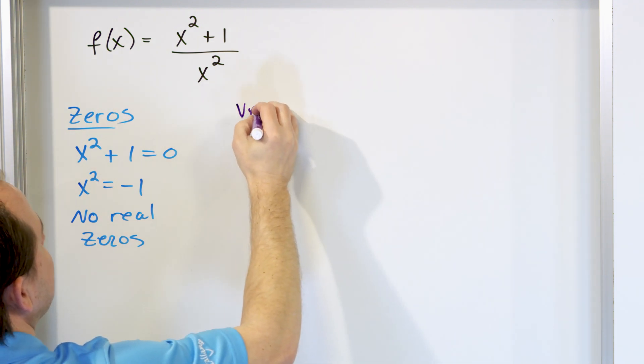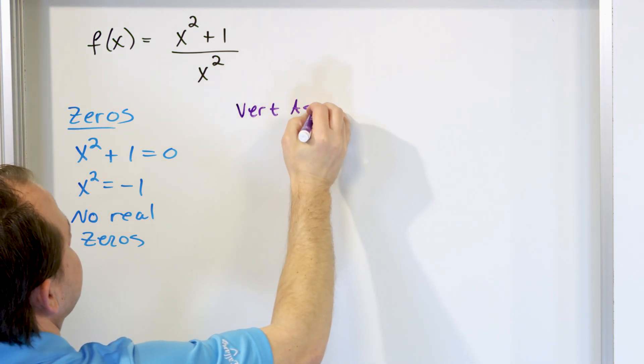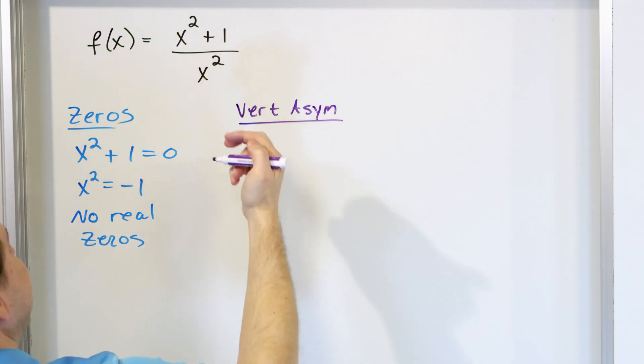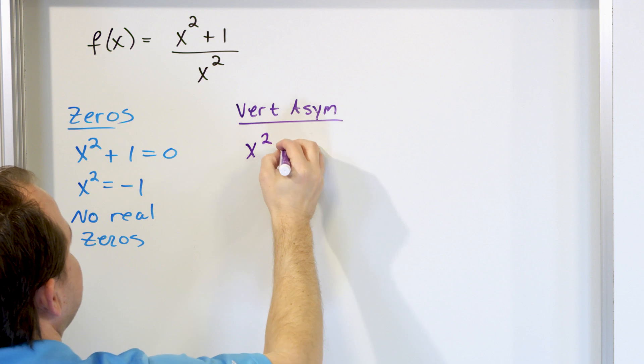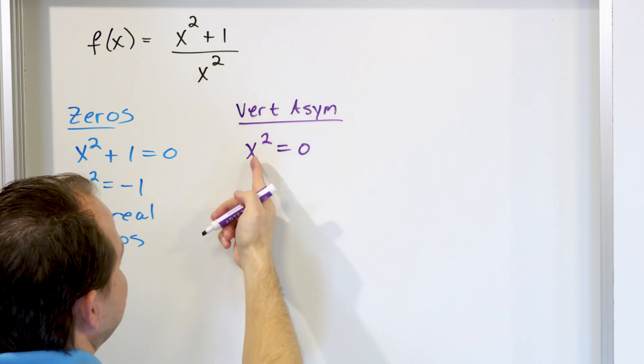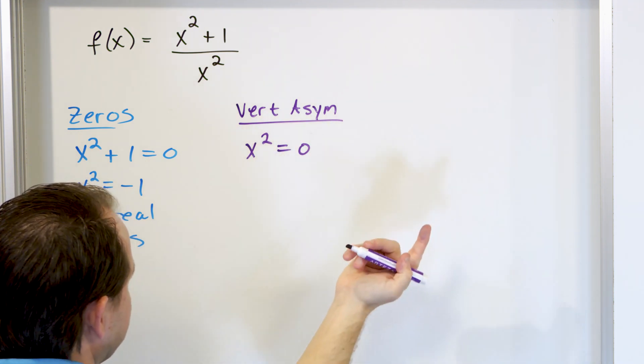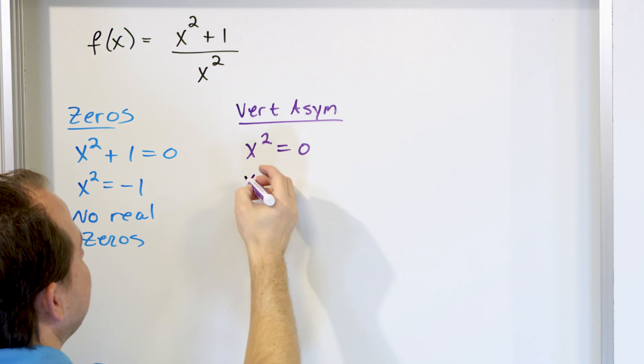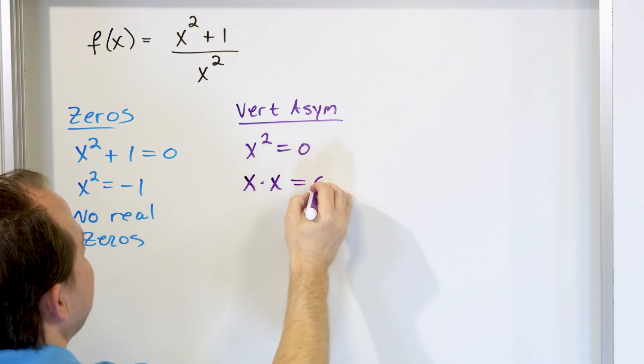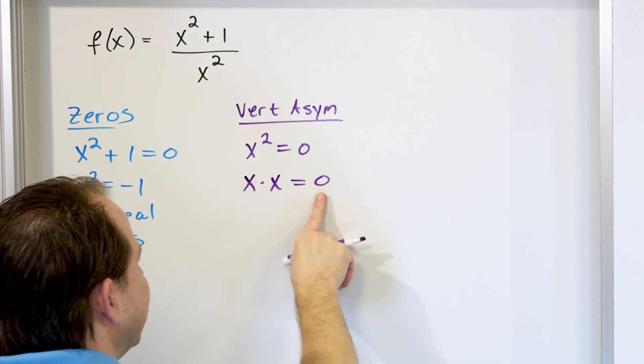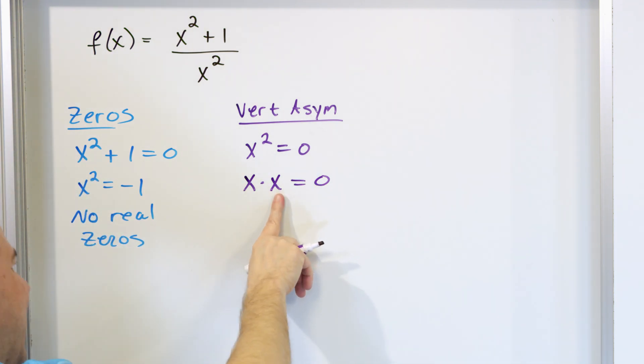So there are no zeros. This function does not cross the x-axis. Now let's take a look at the vertical asymptotes. The vertical asymptotes. In order to do that, we take a look at the denominator and set it equal to zero. And we figure out that, of course, we can solve this. You can think of it as you can take the square root of the left and the square root of the right, and we'll do that a little bit later. But you can, at this point in the game, think of it as x times x being equal to zero, because that's what x squared is. So we can set x equal to zero. That will be one solution. We can set the other x equal to zero.